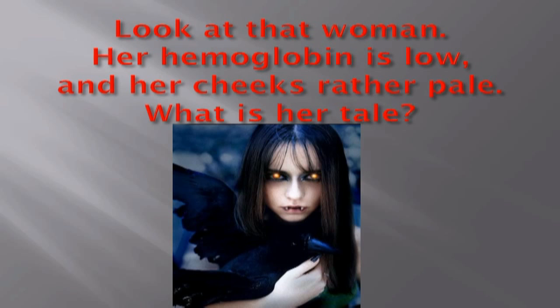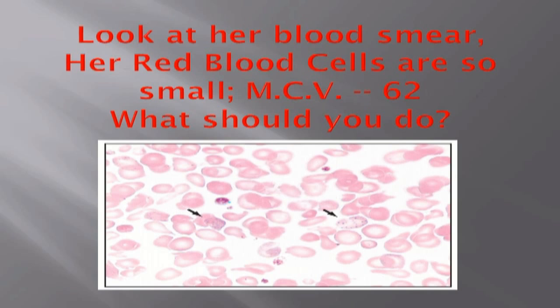Look at that woman — her hemoglobin is low and her cheeks are rather pale. Look at her blood smear: her red blood cells are so small, MCV 62. What should you do?